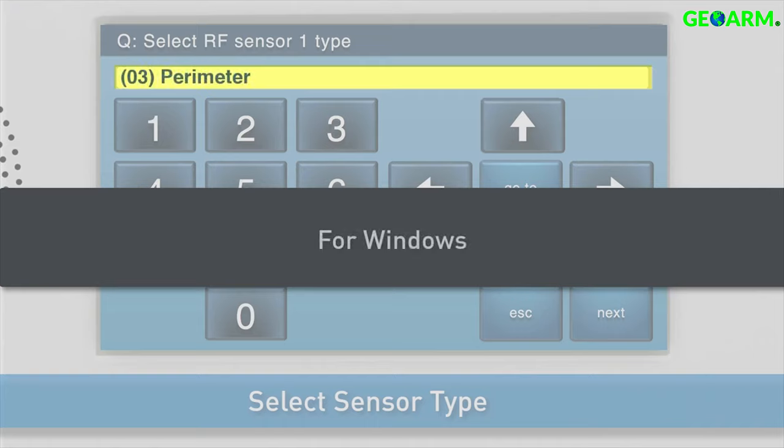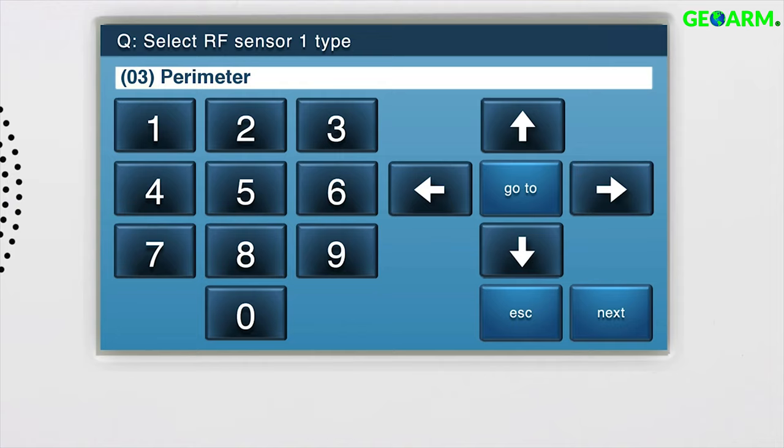Select 03 Perimeter if the sensor will be used on a window. The alarm will instantly trigger with no countdown as soon as the window is opened while the panel is armed.